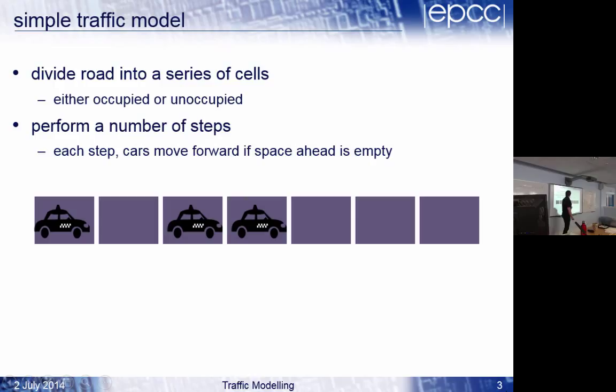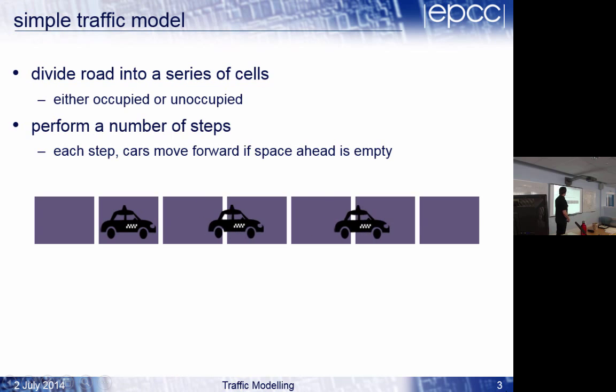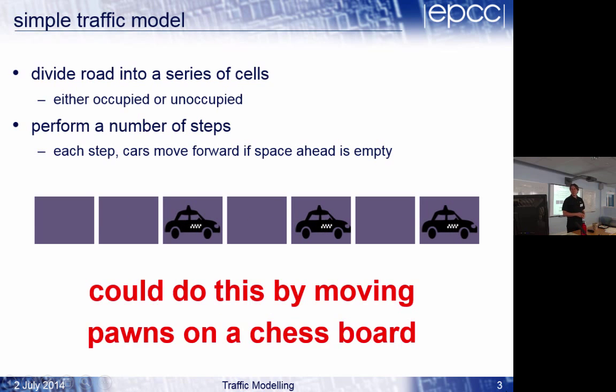And this is done instantaneously. We don't say that car moves forward, then that one can, then that one can. What we do is we look at it and say that car can move, that one can't, and that one can, and then we move them all. It's an instantaneous update. It doesn't depend on the order of the update. So you can see that both those cars would move, then both those cars would move. And very quickly you get this one, zero, one, zero, one, zero effect where everybody moves.